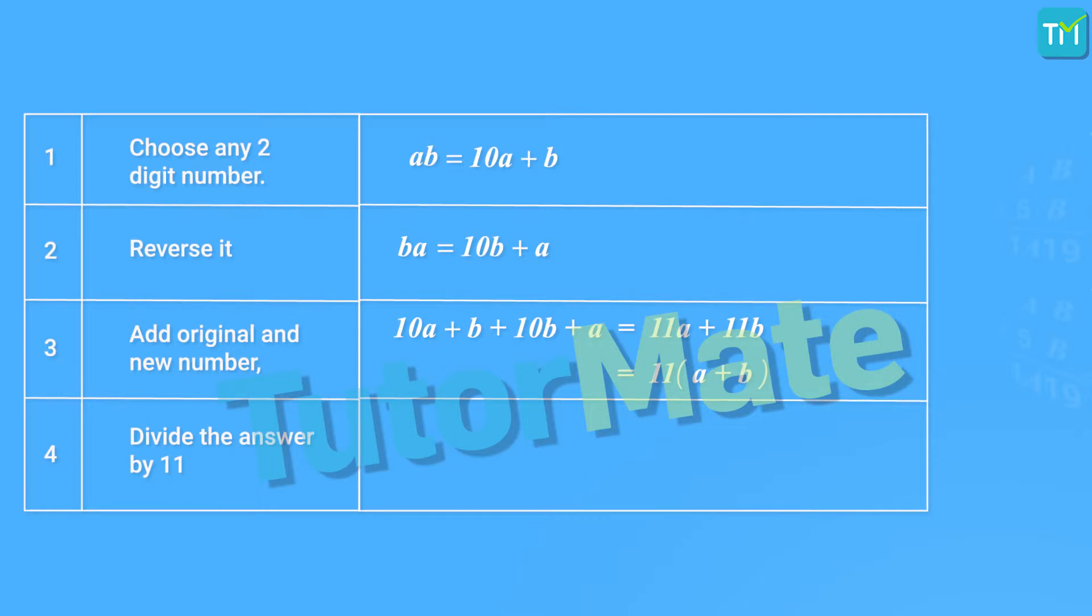We can see clearly that the sum is a multiple of 11, irrespective of the values of A and B, and so when we divide it by 11, it will always give us the remainder as 0, for all the values of A and B.